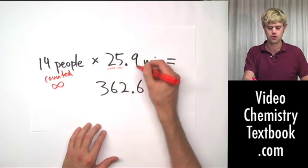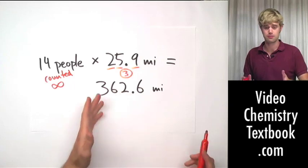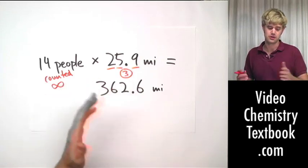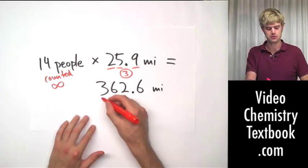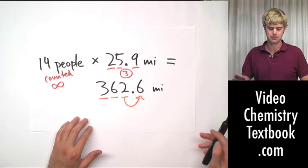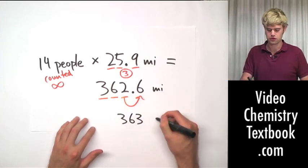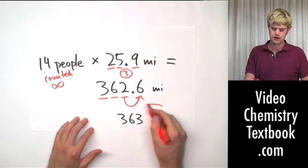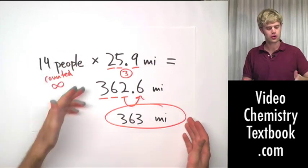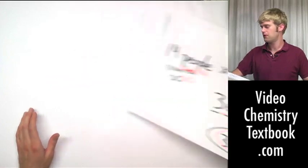So, one, two, three significant figures here, which means that we're going to round our final answer to the smallest number. We have infinity as opposed to three. So I think we're going to have to go with three here, which means we're going to keep the three, keep the six, keep the two. We look to see whether we round up or keep it the same. Our final answer is going to be 363 miles. Once again, certain, not so certain, so we have to use significant figures here to round.